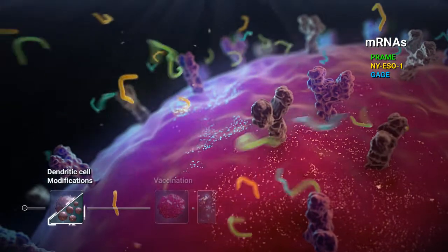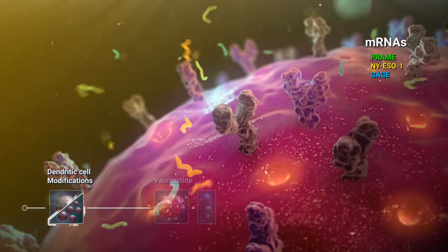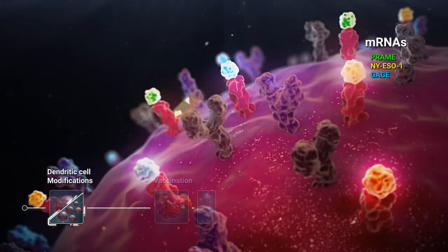The mRNA encoding for the chosen antigens is electroporated into the cell. This leads to presentation of a broad spectrum of antigen-specific epitopes on the surface of the dendritic cell.